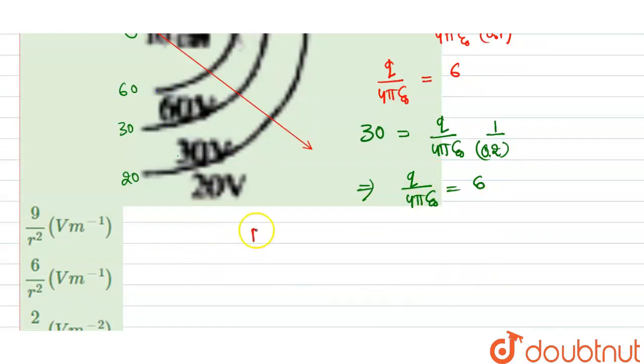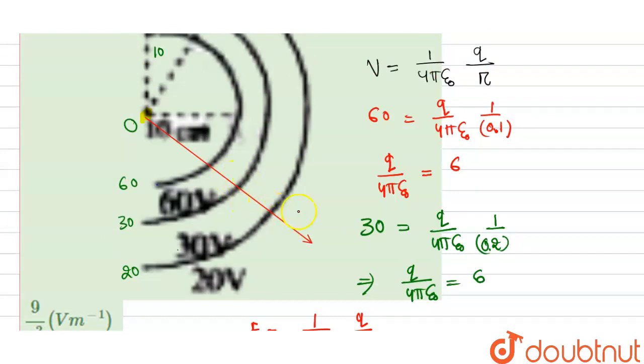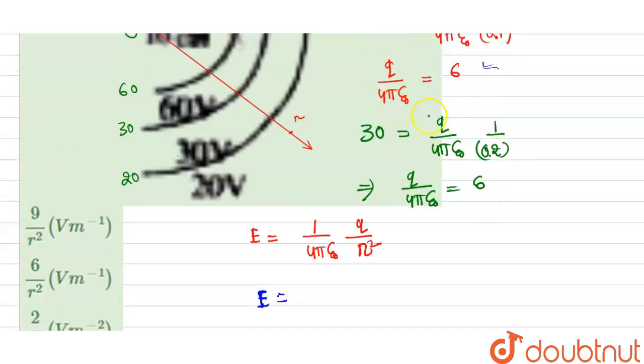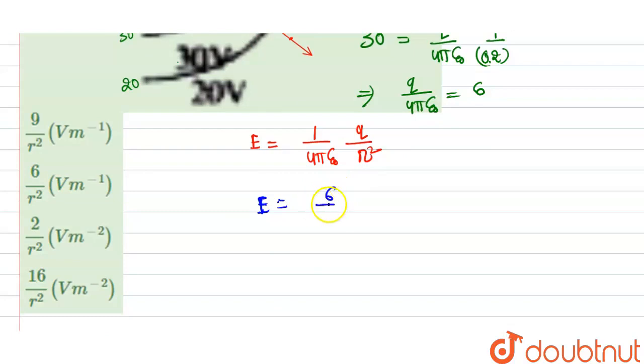We know that the expression for electric field E equal to 1 by 4πε₀ q divided by distance r square. If you consider any distance r here, what will be the electric field at the distance? It is easy for us to calculate here. So from here we can get that is E equal to, this is q by 4πε₀ term we have already got that 6, so we can put in place of q by 4πε₀ that is 6 and divided by this is r square. So we are getting our electric field that is 6 by r square and unit will be volt per meter. So we can tick our second option is the right answer.